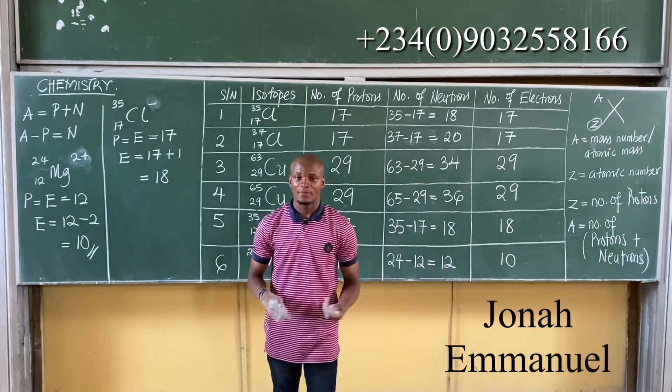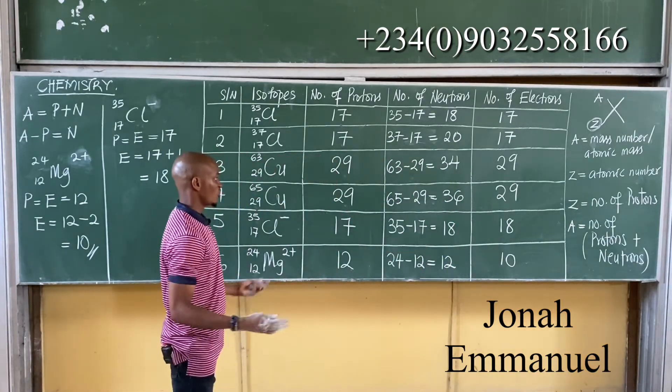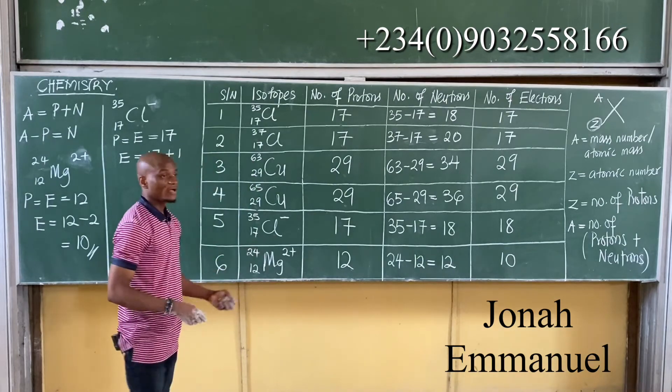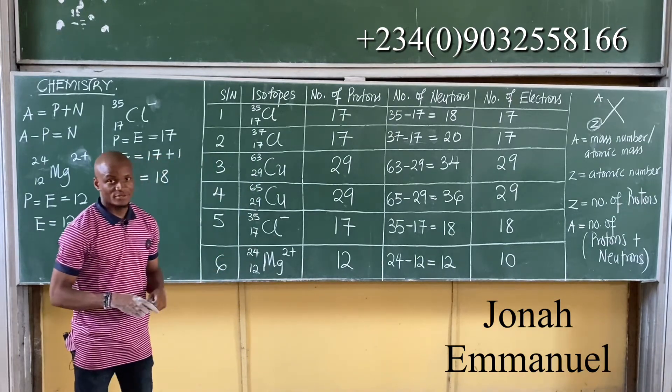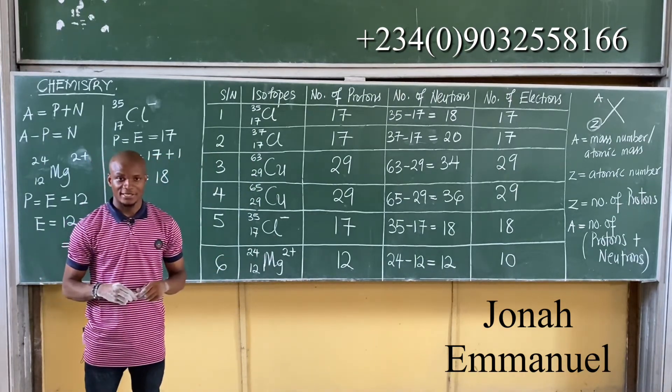So this is how we get the atomic makeup of isotopes. See you in the next class.